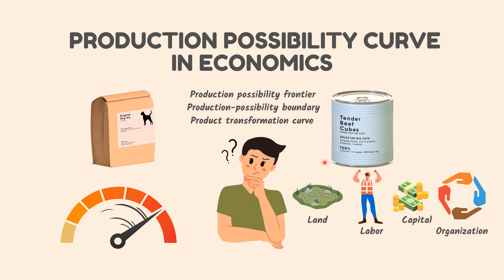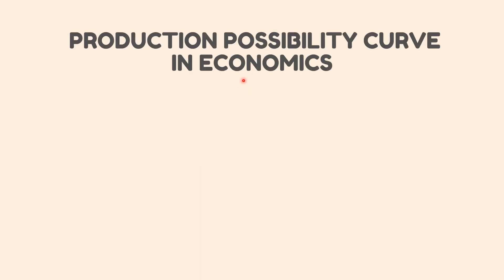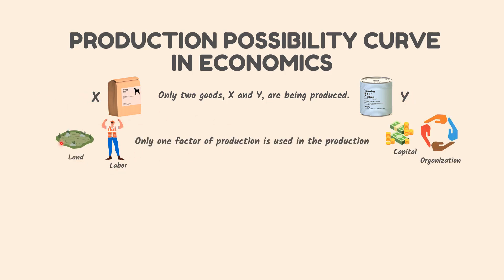Let us consider the shape and use of the production possibility curve. In our discussion we make the following assumptions. Number 1: only two goods, X and Y, are being produced. Number 2: only one factor of production is used in the production — that factor of production is labor. The supply of labor in the economy is fixed and the total amount of labor is fully employed.